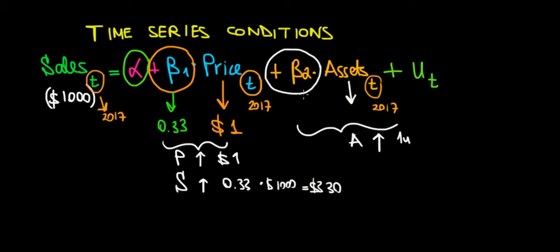Then assuming that beta 2, let me give an example, let's say 0.17. Well that means that our sales are going to go up by 0.17 times a thousand dollars, that would be equal to $170. So the effect of assets on sales in 2017 is going to be $170. Sales would go up by $170.